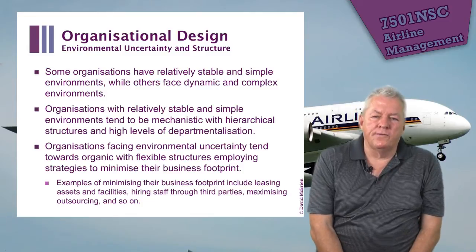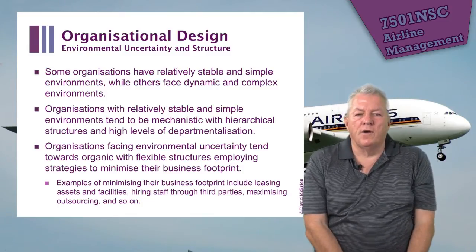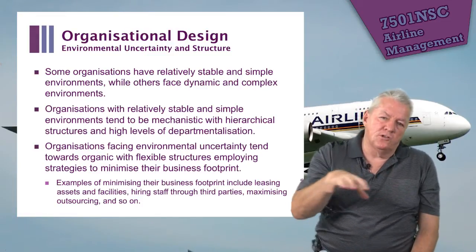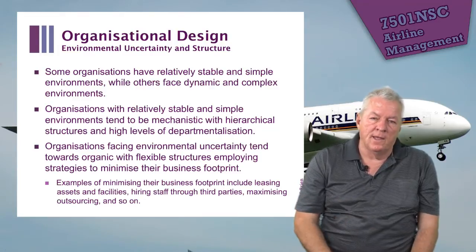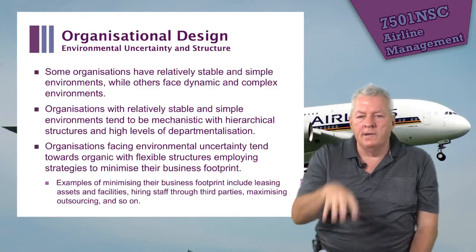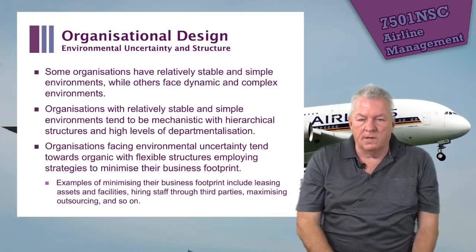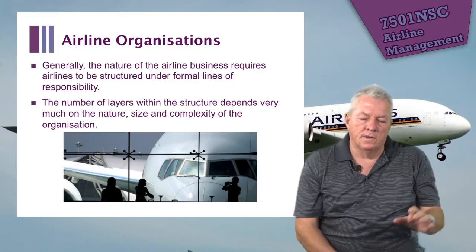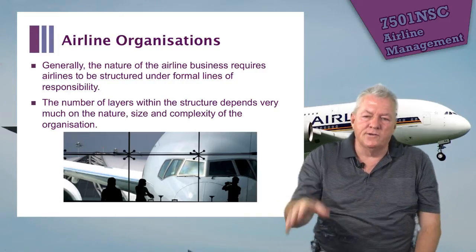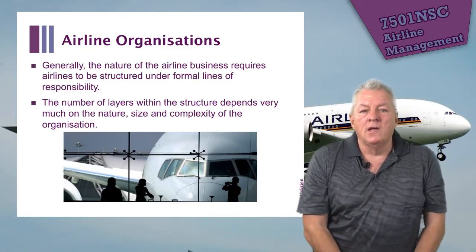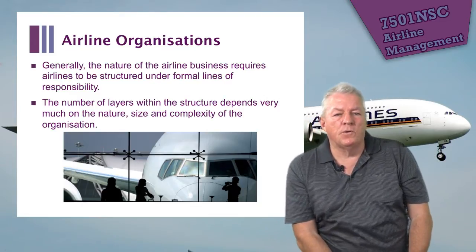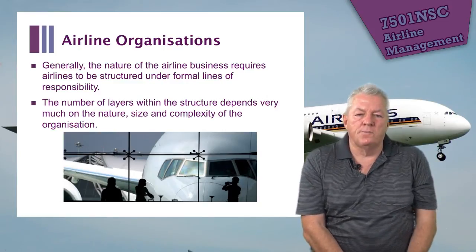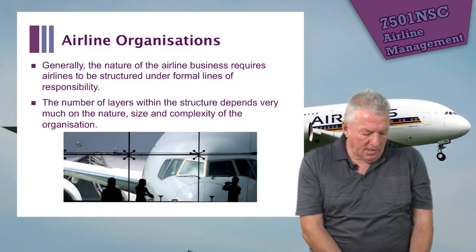There's also environmental uncertainty. If an organization operates in an uncertain environment, it will tend to have a more flexible structure that can quickly adapt to changing circumstances. In a more certain environment, it will have a more static, hierarchical, mechanistic structure for day-to-day business. Generally, the nature of the airline business requires airlines to be structured under formal lines of responsibility, with the number of layers depending on the nature, size, and complexity of the organization.